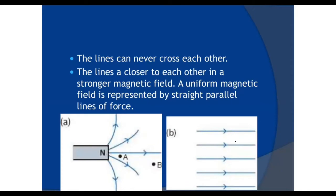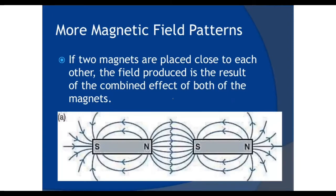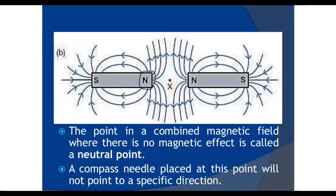These field lines will never cross each other. Near a magnet, the magnetic field lines are closer to each other, but as you move away from the magnet, the field lines have greater spaces between them. When you place two magnets with opposite poles near each other, they attract and the field lines move from north to south. When you place like poles together — north-north or south-south — repulsion occurs and the magnetic field lines move away from each other.